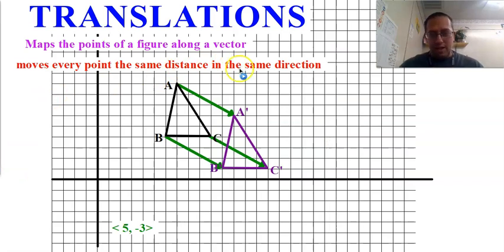Anyways, so, anyhow, A maps to A prime, B maps to B prime, C maps to C prime. Okay, so now we have two shapes. We have the original and the new one.